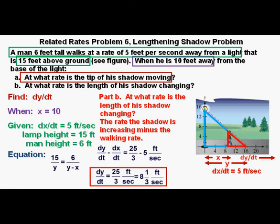So, our answer to Part B is going to be dy/dt minus dx/dt. And that equals 25 thirds minus 5 feet per second.